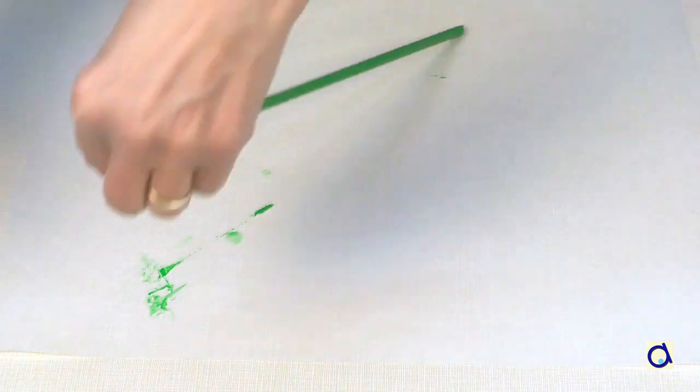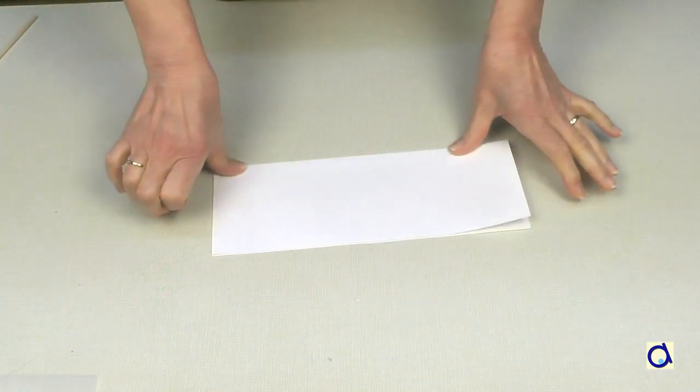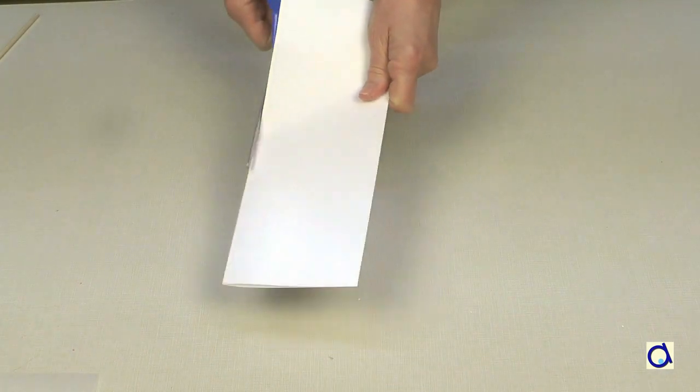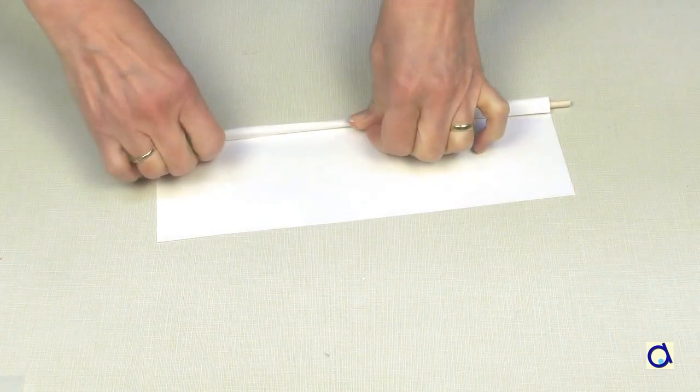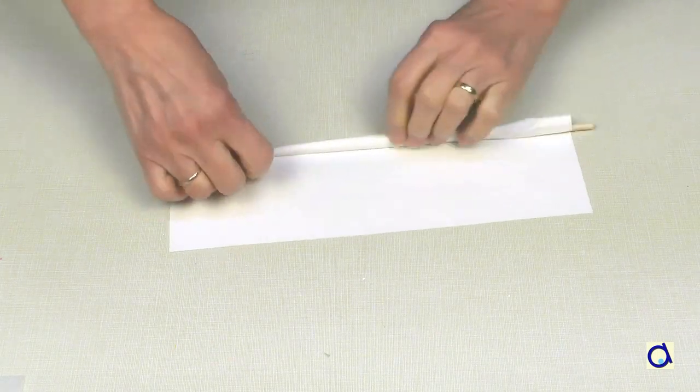For a large group, the cost of wooden dowels can be a challenge. Instead of using wooden dowels, use a regular sheet of paper and cut it in half lengthwise. Wrap the half sheet around a knitting needle, a pencil, or a wooden dowel.